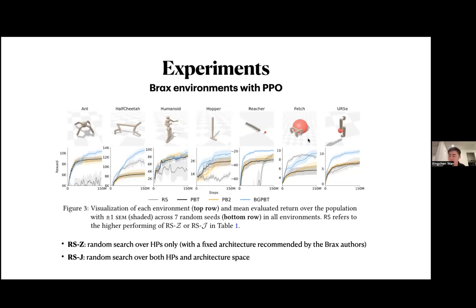For most environments, we see quite large improvements over PB2 and PBT. One reason PB2 underperforms is it is now tuning many more hyperparameters — around 12 — compared to the 4 it was originally designed for, and standard BO struggles in higher dimensions without high-dimensional modifications. BGPBT's trust-region-based Cosmopolitan agent addresses this scalability issue.